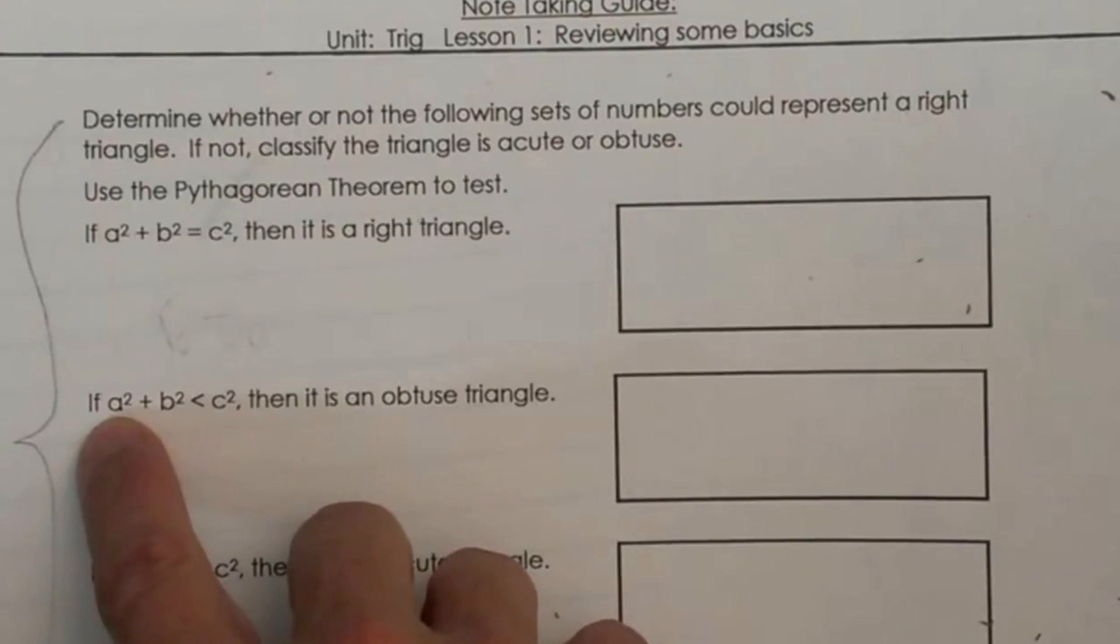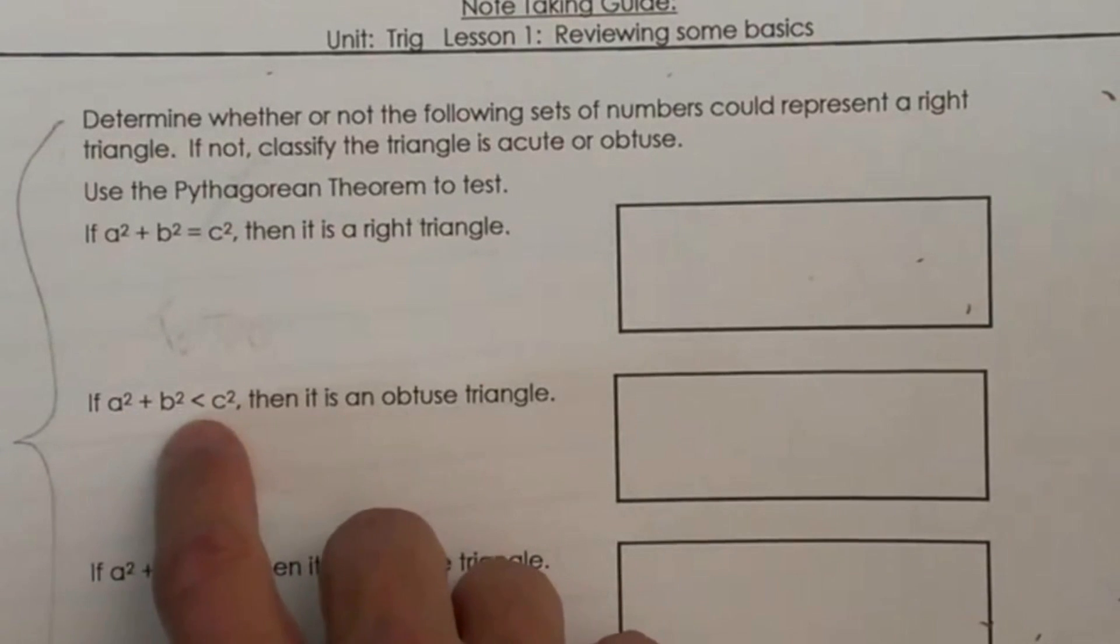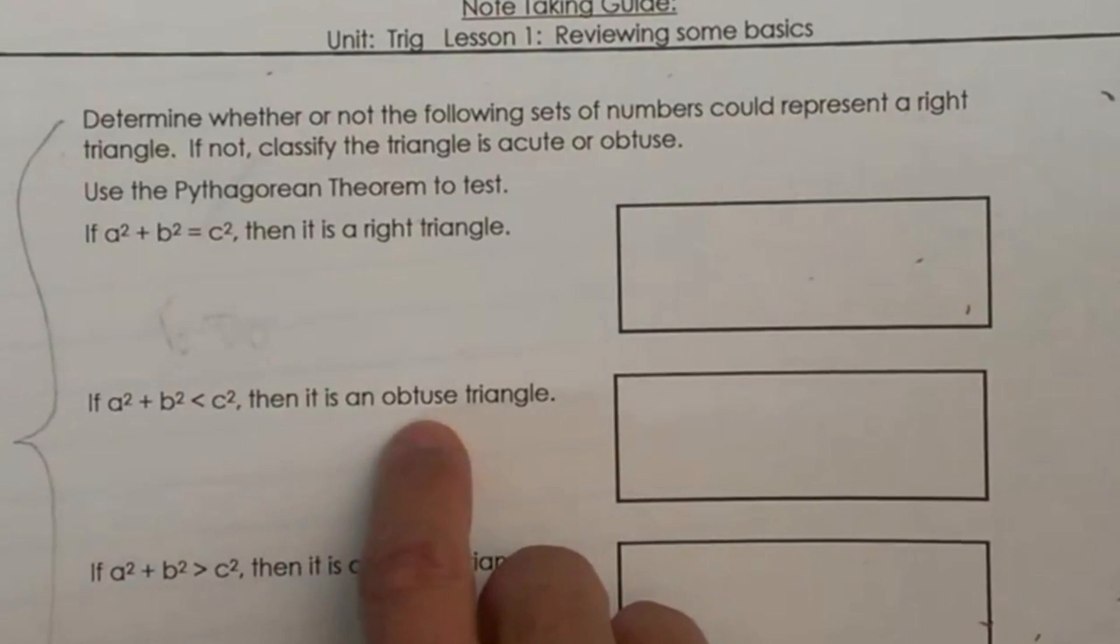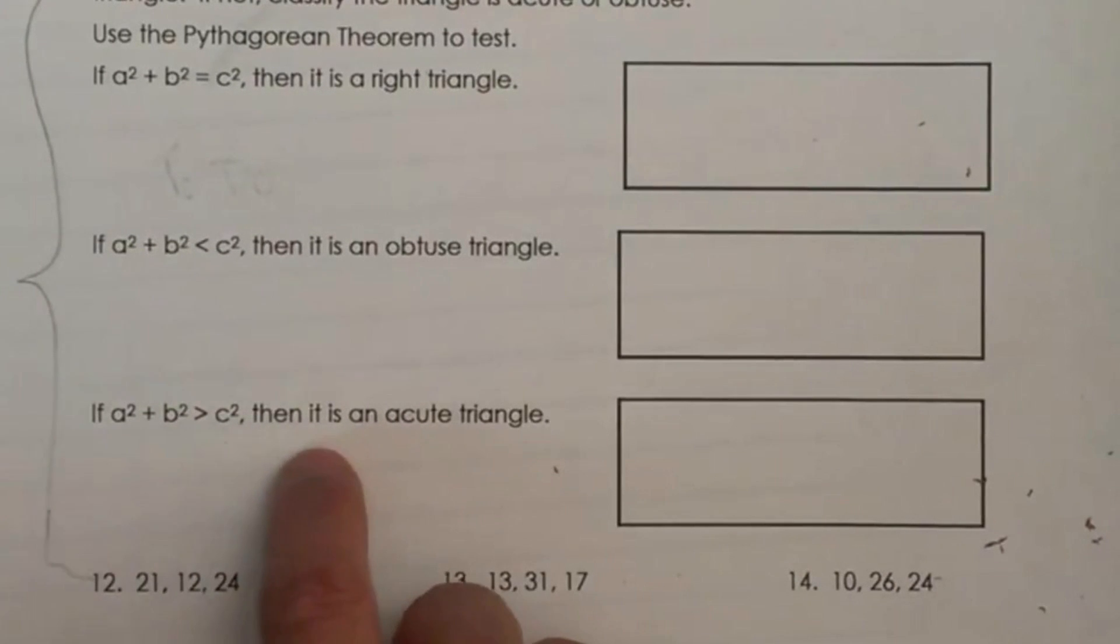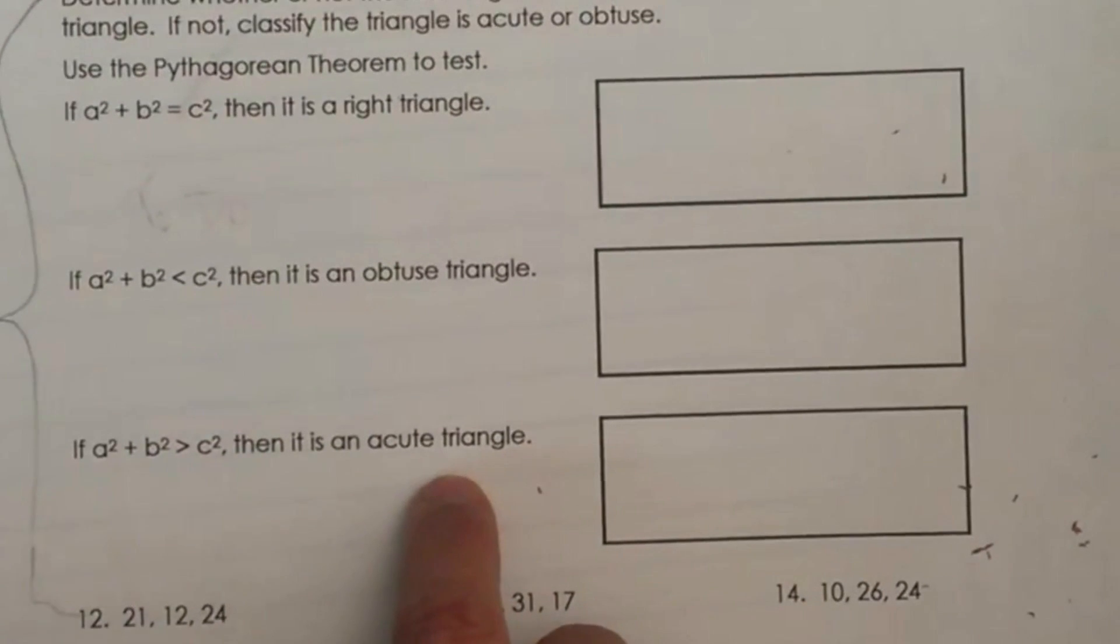But if you calculate A squared plus B squared and it is less than C squared, then we know we have an obtuse triangle. If A squared plus B squared is greater than C squared, then we know we have an acute triangle.